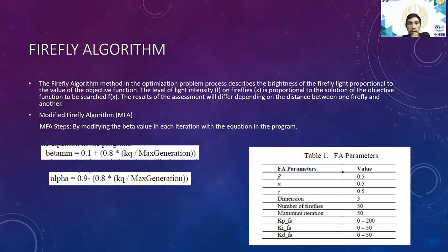For the firefly algorithm, the optimization problem process describes the brightness of the firefly light as proportional to the value of the objective function. The level of light intensity on a firefly is proportional to the solution of the objective function to be researched. The results of the assessment will differ depending on the distance between one firefly and another. The method modifies the beta value in each iteration using the beta mean and alpha equations. Table 1 describes the firefly algorithm parameters and the value of each parameter.